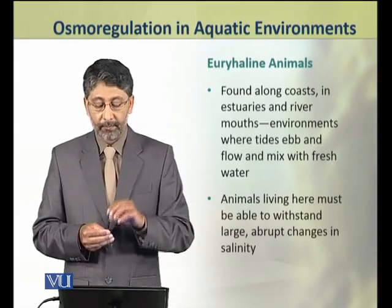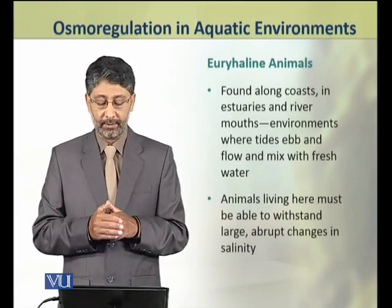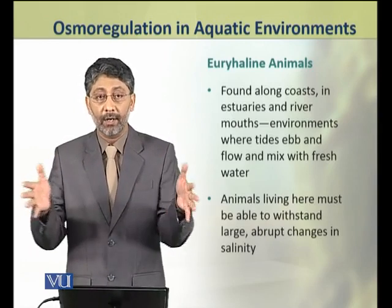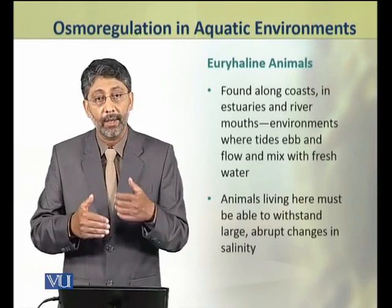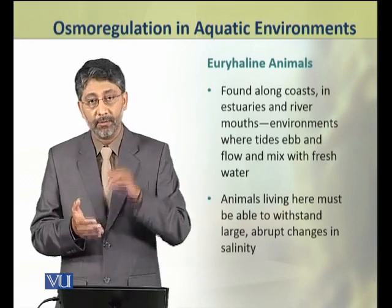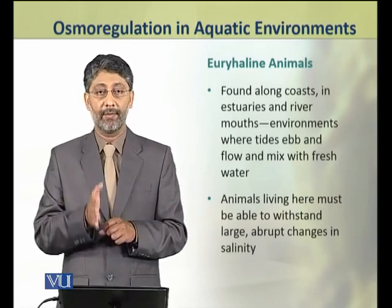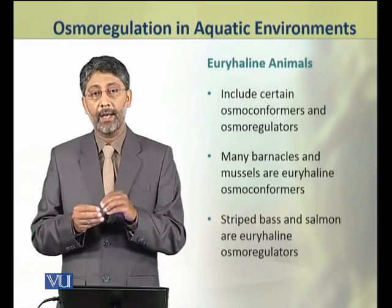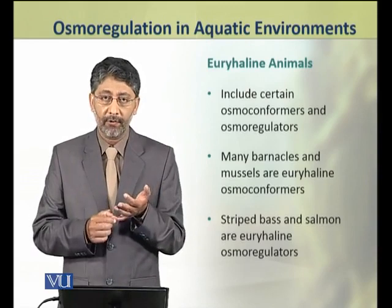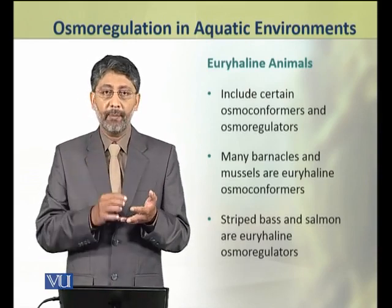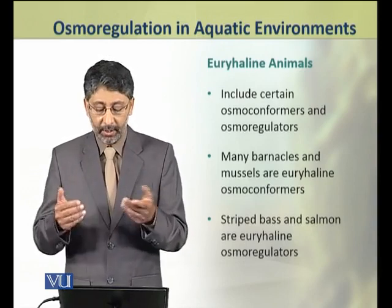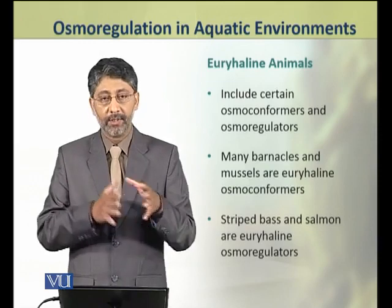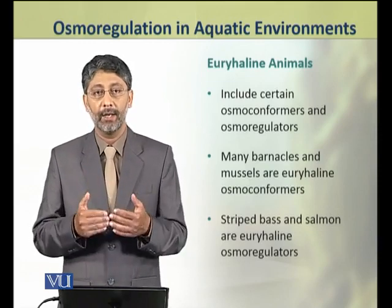Euryhaline animals are found along the coasts, in estuaries, and in river mouths. They include many osmoconformers as well as osmoregulators. Many barnacles and mussels, which are invertebrates, are euryhaline osmoconformers, as well as striped bass and salmon, which are euryhaline osmoregulators.